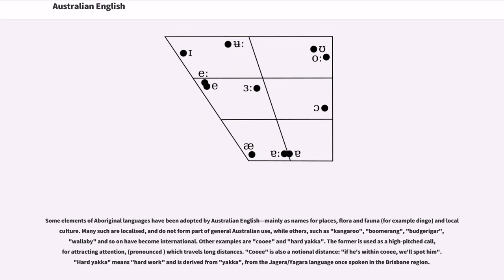Other examples are cooey and hard yakka. The former is used as a high-pitched call, for attracting attention, which travels long distances. Cooey is also a notional distance: if he's within cooey, we'll spot him. Hard yakka means hard work and is derived from yakka, from the Jagera/Jagara language once spoken in the Brisbane region.